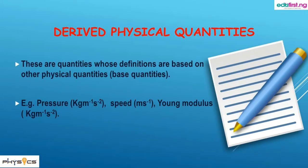So now, what are derived physical quantities? They are quantities whose definitions are based on other physical quantities. In a nutshell, derived physical quantities — from the word 'derived' — means they are derived from other physical quantities.